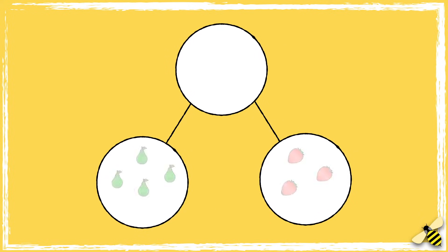Let's have another go. How many pears are there? One, two, three, four. How many strawberries are there? One, two, three.